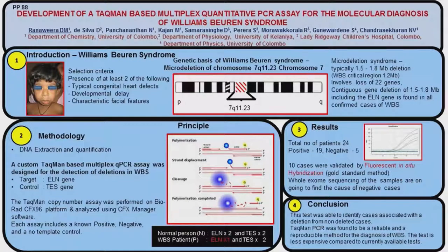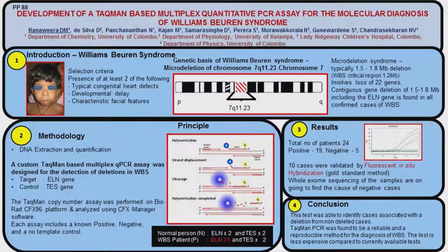The fluorescence signal is directly proportional to the amplified product. There is also a positive control, negative control, and no-template control in each assay. Only one copy is deleted in each patient. In a normal person, there are two elastin genes in the target region and two TES genes in the control region. But in a Williams-Beuren syndrome patient, there is only one copy of the elastin and two copies of the TES gene.